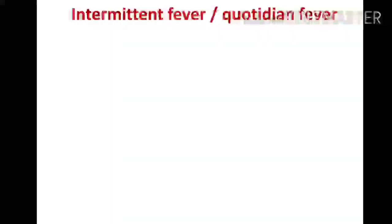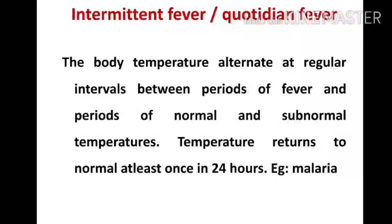Next is intermittent fever, also called quotidian fever. Here the body temperature alternates at regular intervals between periods of fever and periods of normal or subnormal temperature. The temperature rises from normal to high fever and comes back to normal at regular intervals. The temperature returns to normal at least once in 24 hours. It is seen in malaria.